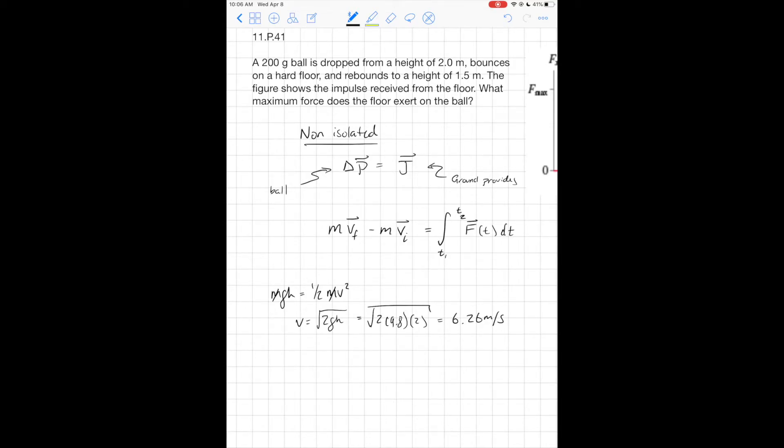So that's my initial velocity. I think the way I want to do this is to say that vi is going to be negative. So I have m times this vf, which I'm going to leave blank for now.